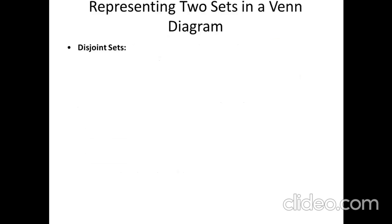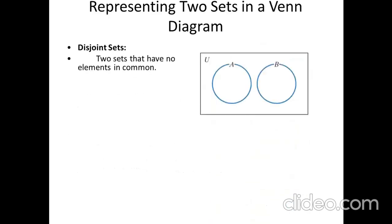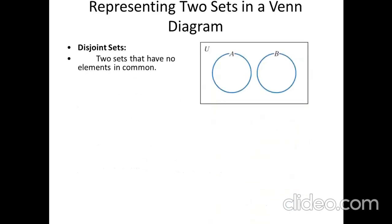For disjoint sets in a Venn diagram — sets that have no common elements — we represent the Venn diagram with a rectangle for the universal set, and the subsets drawn as separate, non-overlapping circles inside it. These sets have the relationship that they are mutually disjoint with no element common between them.